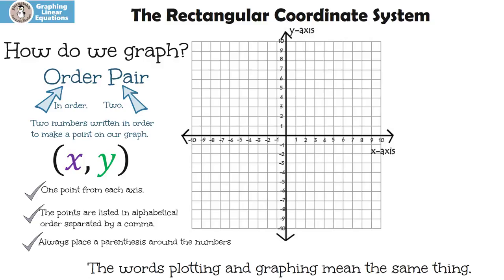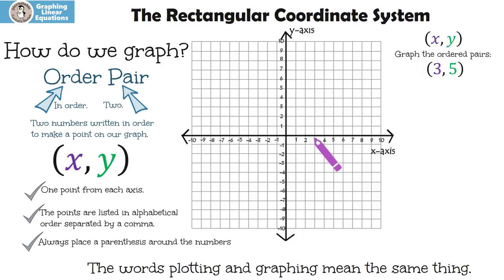I do want to mention that the words plotting and graphing mean the same thing. Let's plot or graph these. We're going to graph the ordered pair three, five. What we're going to do is put our pencil in the center. We're going to go three places on the x, and then we're going to go up five places on the y. And that's where we put our dot.